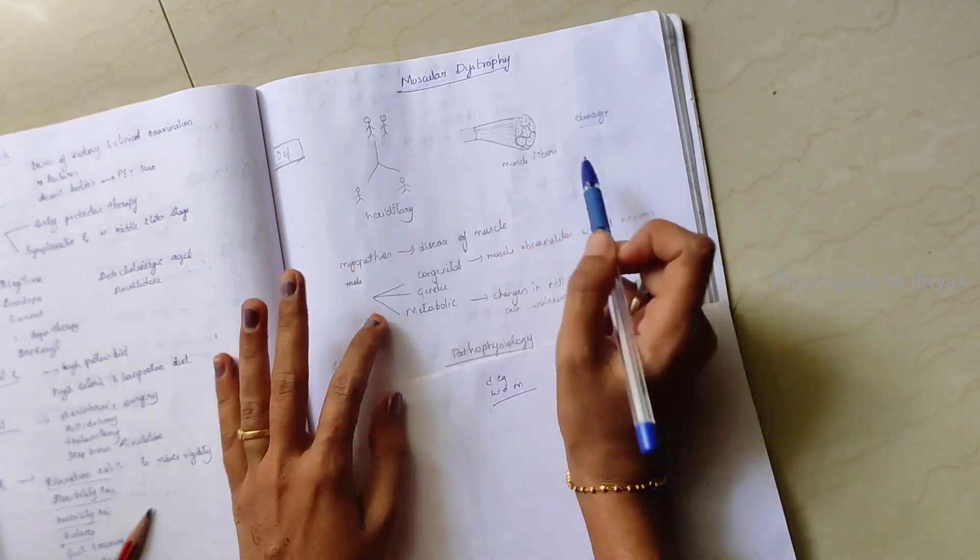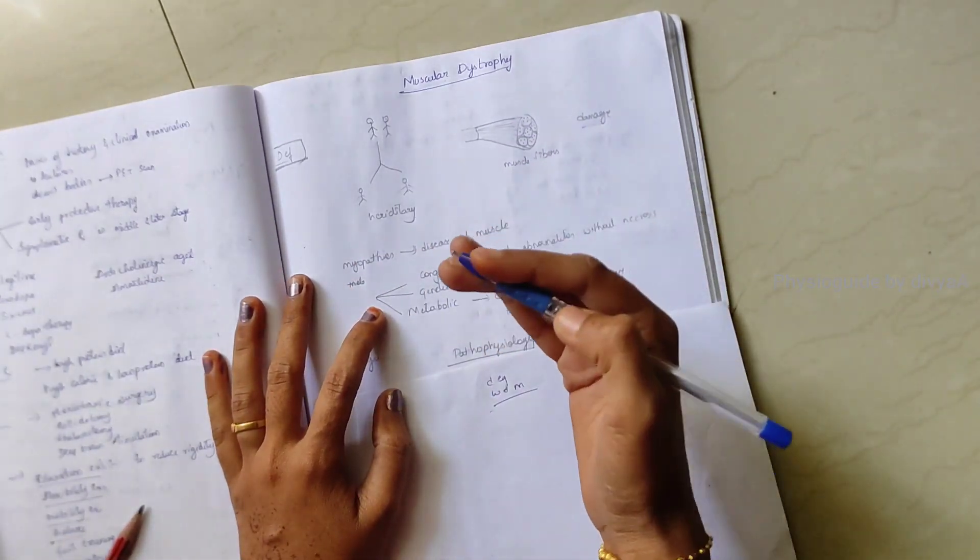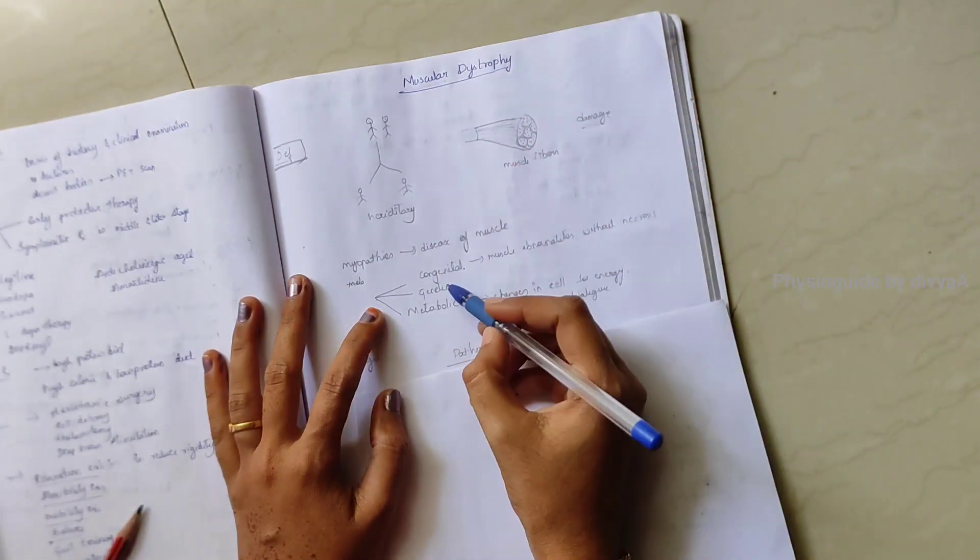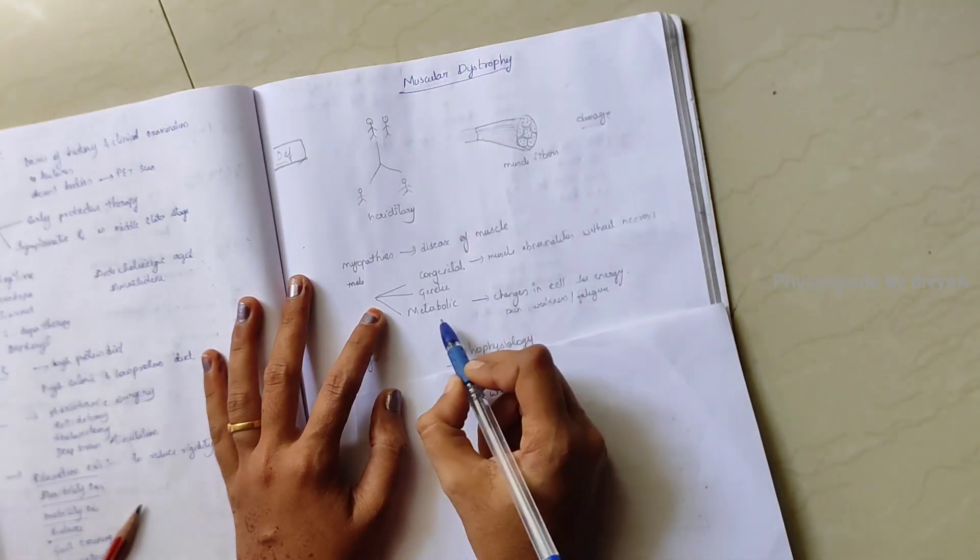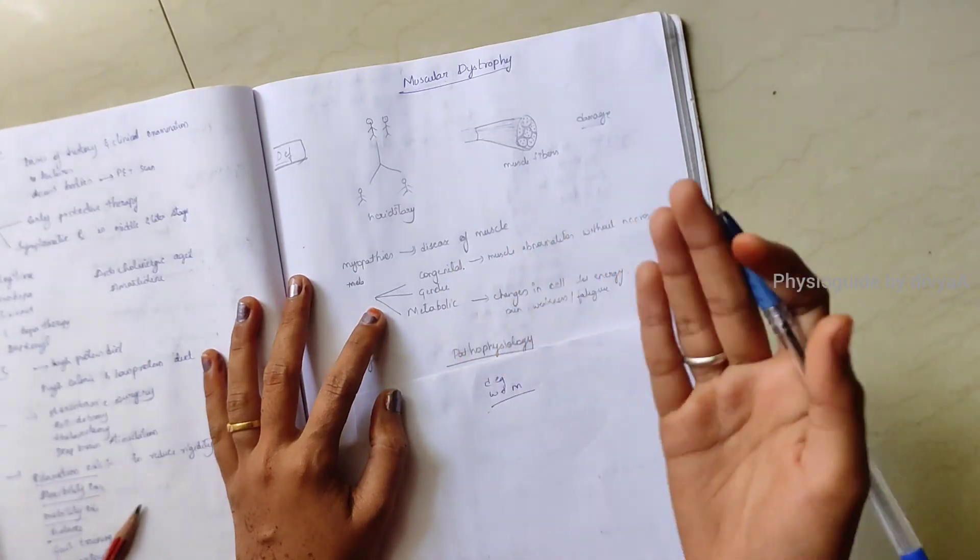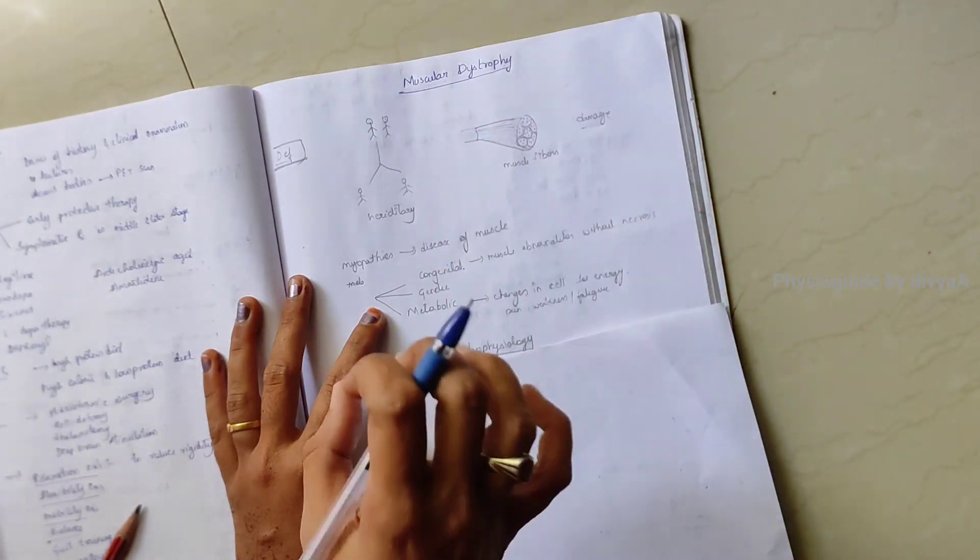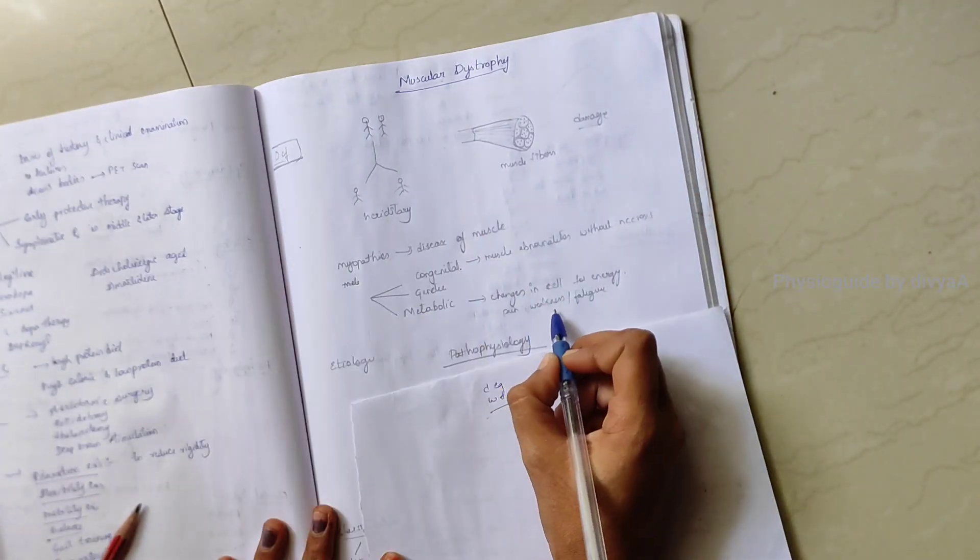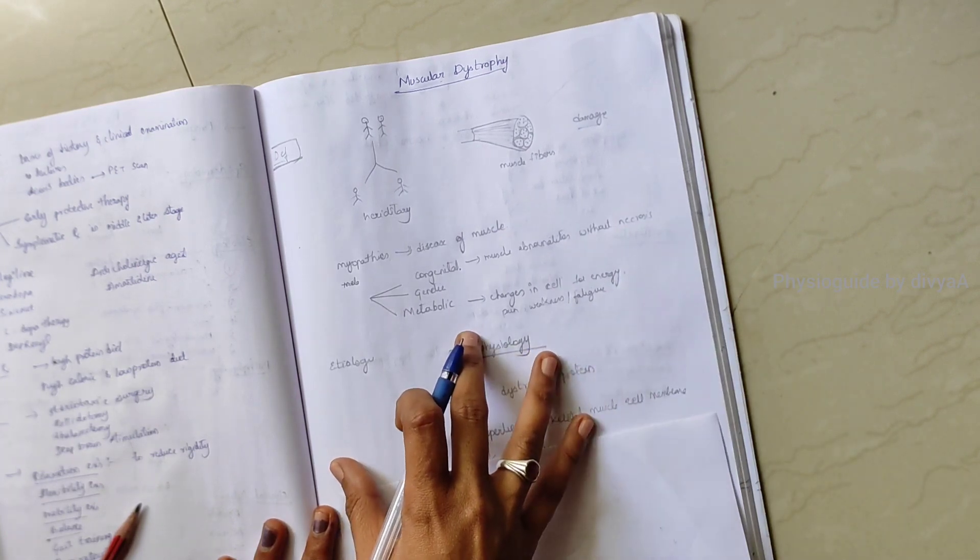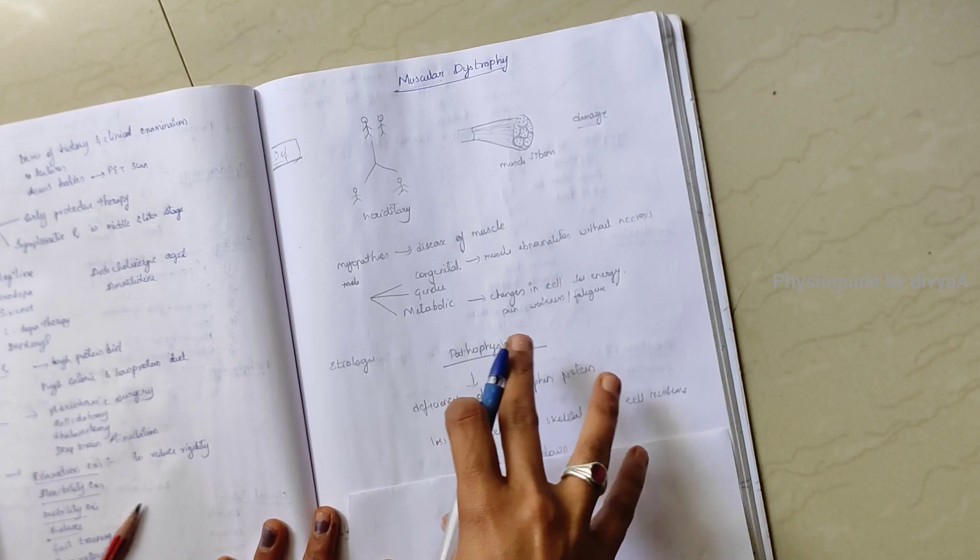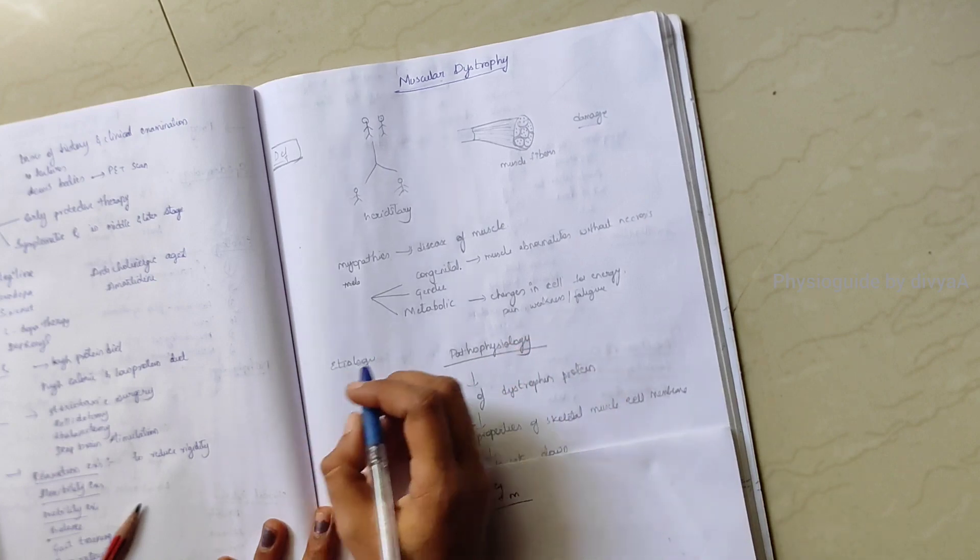Congenital means from birth onwards this dystrophy occurs. Genetic means hereditary from parents to next generation. Metabolic means by change in the cells which produce energy, so pain, weakness and fatigue is seen. Males are more affected in this muscular dystrophy than females.